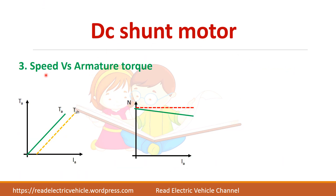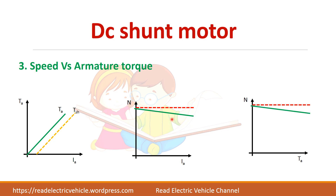The third characteristic — mechanical characteristic — is derived from the previous two. Plotting speed versus torque gives a curve similar in shape to the speed versus armature current curve. Always remember the three formulas so that you can draw the characteristics easily.